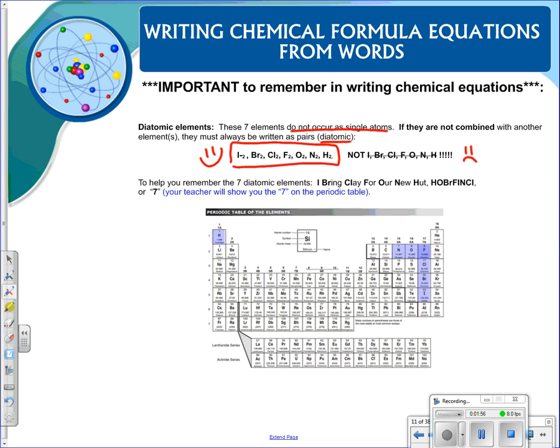So to help you remember these seven diatomic elements, my preferred method is to remember that they make a seven on the periodic table with the exception of hydrogen. Don't forget hydrogen, but remembering that they make a seven on the periodic table seems to be the easiest method.